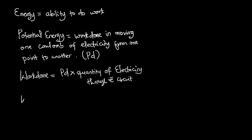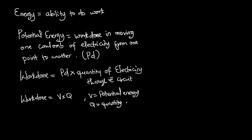The work done is given mathematically as potential difference — which we use V to represent — multiplied by Q, which is the quantity of electricity through the circuit. So W = V × Q, where V is the potential energy and Q is the quantity of electricity. The quantity of electricity is given by the product of current and time, so Q = I × t.